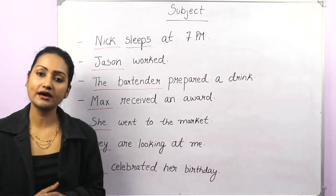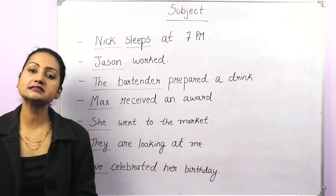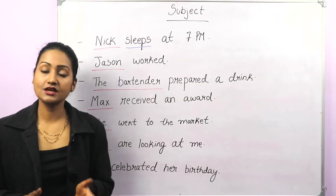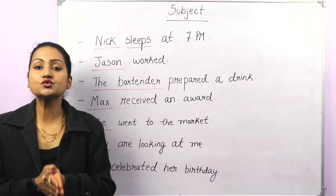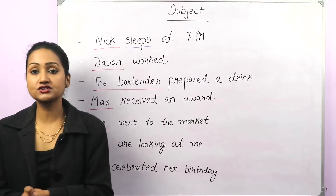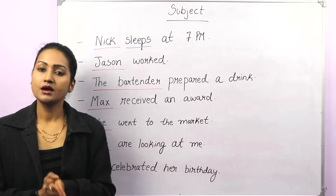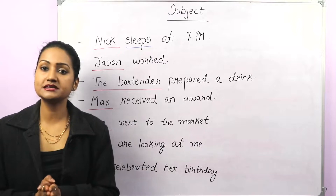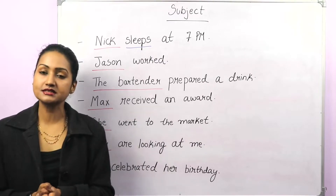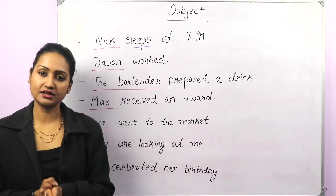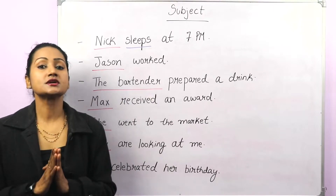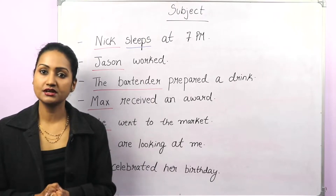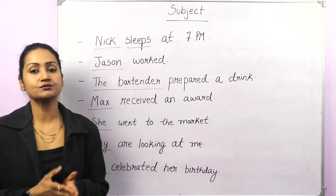Just remember that a sentence generally starts with a subject. Through these sentences, we have understood that the doer of an action is the subject. But there are sentences where we do not have a main verb — there is no action in the sentence. So in that case, what would be the subject? The subject would be the one what or who we are talking about. Let's understand that also through some examples.